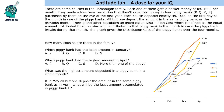Hello everyone, welcome to Aptitude Jab. This is a set which has a line graph given to us. It says that there are some cousins in the Ramanujan family. Each one of them gets pocket money of rupees 1000 per month. They made a new year resolution that they will save this money in four piggy banks — P, Q, R, S — purchased by them on the eve of the new year.